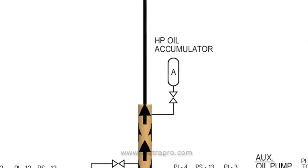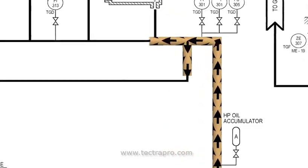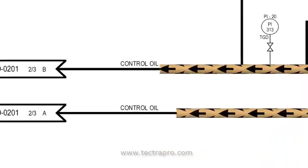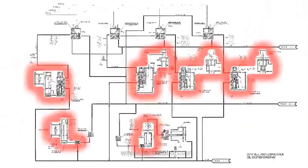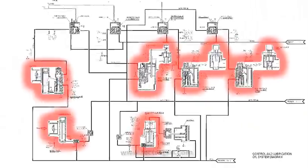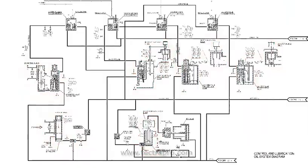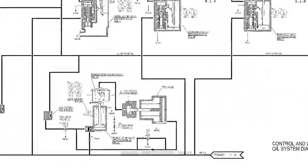High pressure accumulators installed in the transport line help minimize surge in the system. Control oil is used to operate all steam turbine control and stop valves. Control oil also interfaces in turbine supervisory instrumentation.